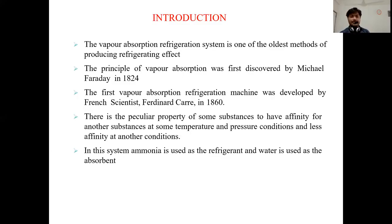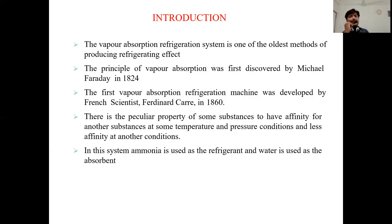There is a peculiarity — some substances have an affinity for another substance at certain temperature and pressure conditions, and less affinity at another condition. This is the main principle behind the Vapor Absorption System. Some refrigerants have an affinity to absorb, attract, or combine with another fluid at certain temperatures. For example, ammonia and water: at low temperature, water absorbs ammonia to make a strong solution.